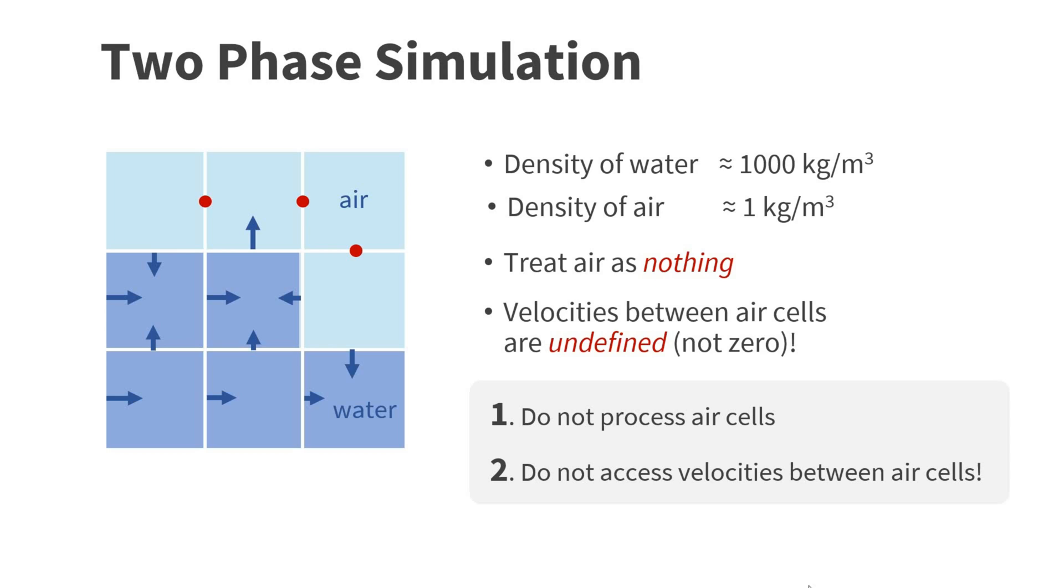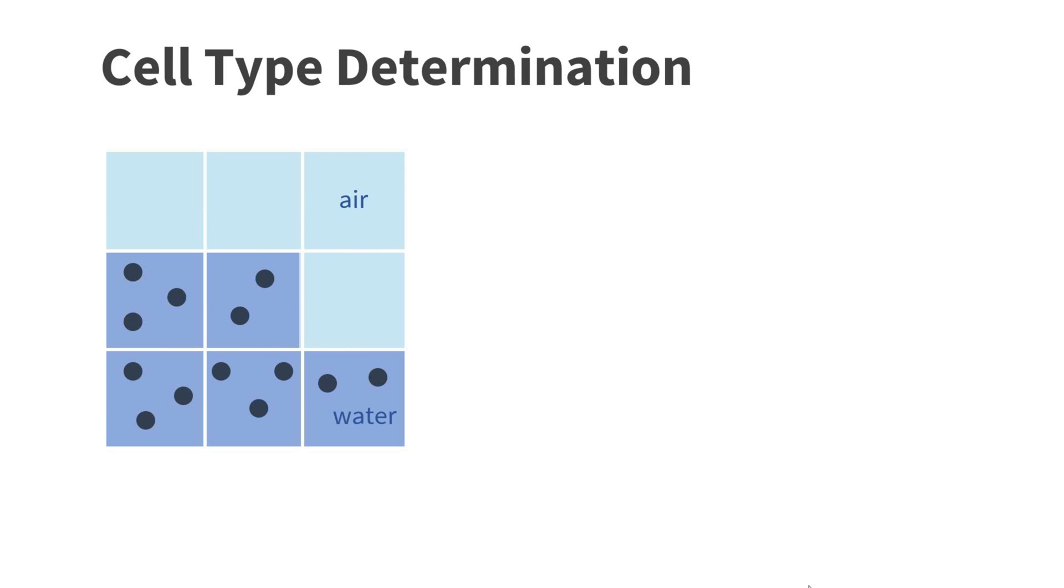Now handling two types of fluid cells is extremely simple. First, we simply do not process air cells. The simulator just skips them. Second, we have to make sure that we never access velocities between air cells when we compute interpolations. Now comes the key question: How do we know which fluid cells are water cells and which are air cells?